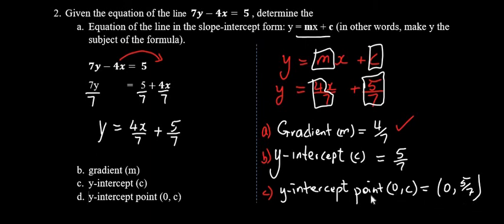Remember, the y-intercept point is that point in which the graph passes through on the y-axis, and the x-coordinate is always 0. The c value of that point where the graph passes through is 5 over 7. The y-coordinate of that point would be our c value.